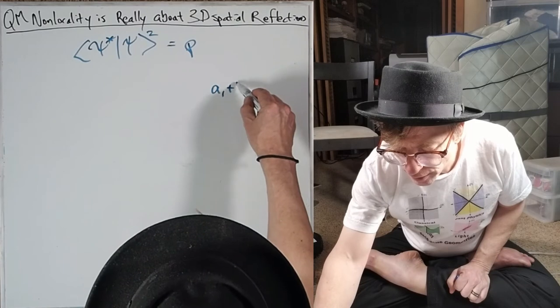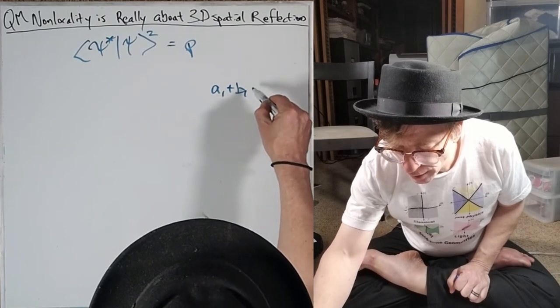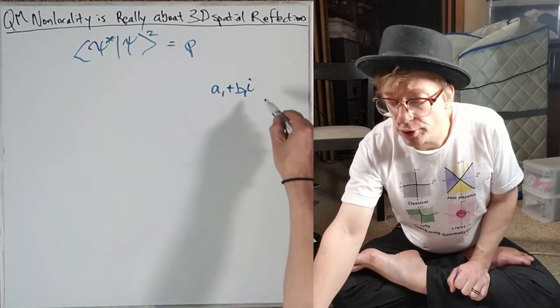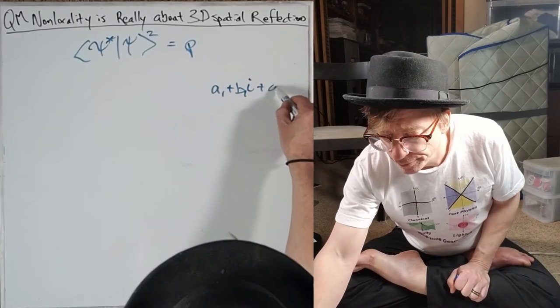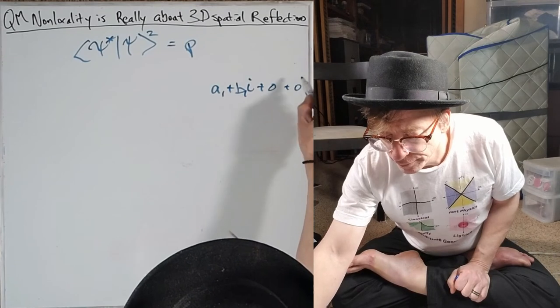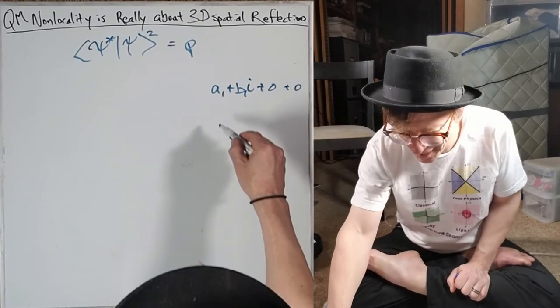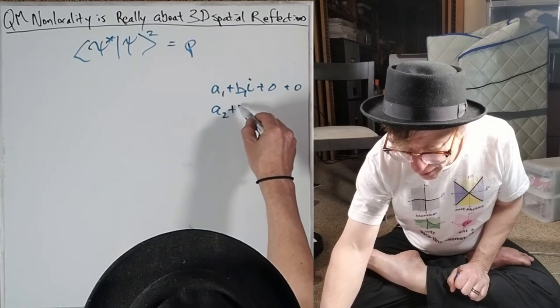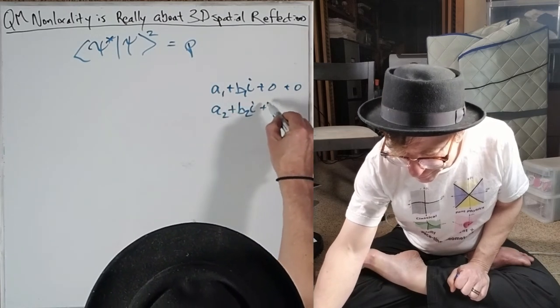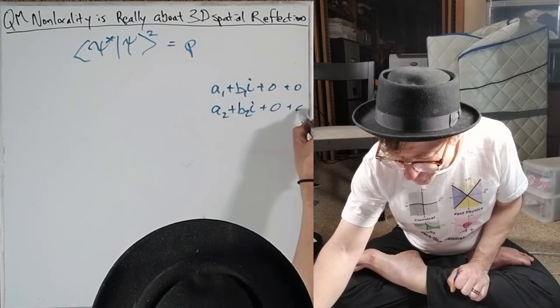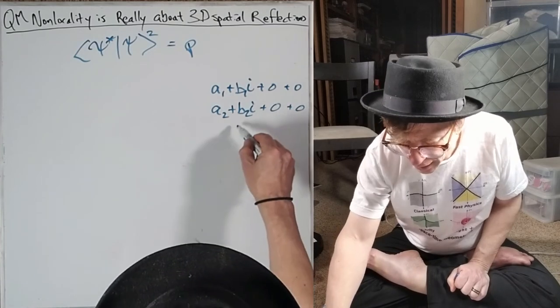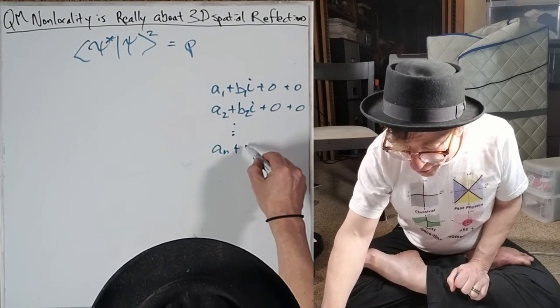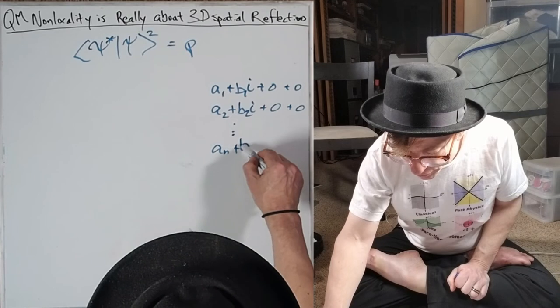The ket thing goes A1 plus B1i. And because it doesn't do any harm, I'm going to add a couple of zeros here. There are many states here - how many depends on what you're looking at. I could be done or I could go to N or to infinity numbers of these things.